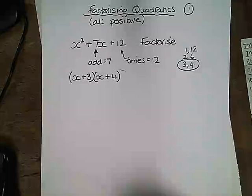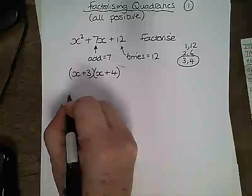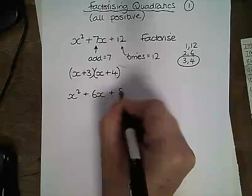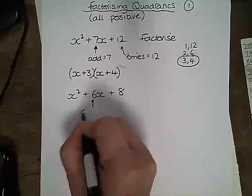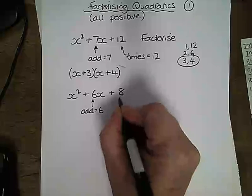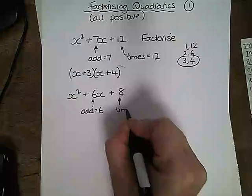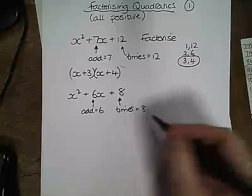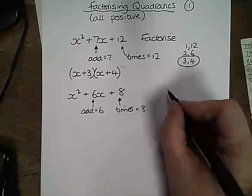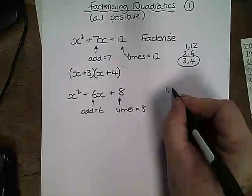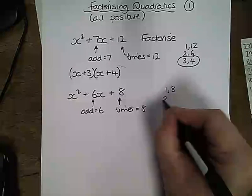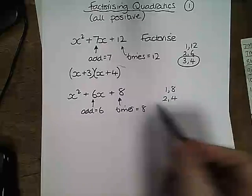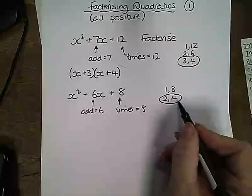I'm going to do two more examples so you can see how it works. We have x squared plus 6x plus 8. We need two numbers that add to give 6 and times to give 8. We always start with the factor pairs for the timesing term. So the factor pairs for 8 are 1 and 8 and 2 and 4. If we add 2 and 4 we get 6 so I'm going to select these two.